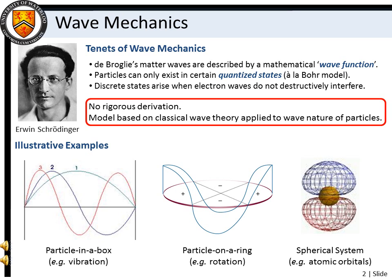We will discuss how this can occur in 1, 2, and 3 dimensions with the illustrative examples of a particle in a one-dimensional box, a particle on a ring, and spherical systems. As you will see, these three basic models can be used to describe vibrational and rotational motions of molecules and electronic orbitals in atoms.